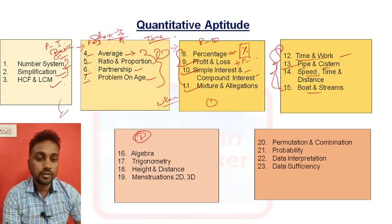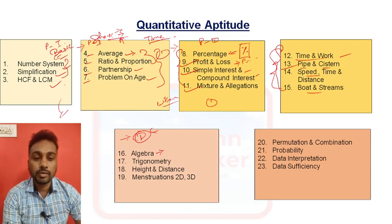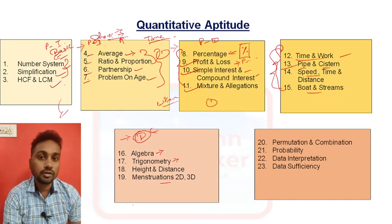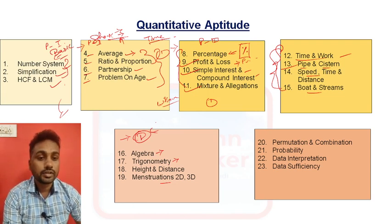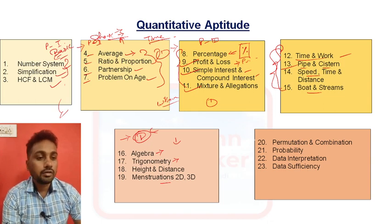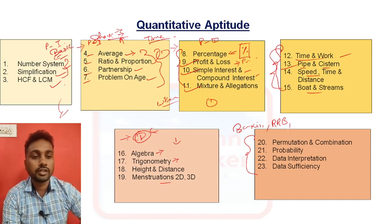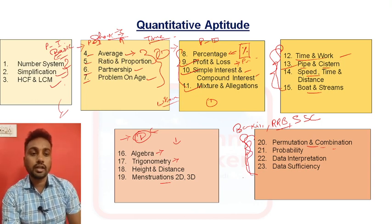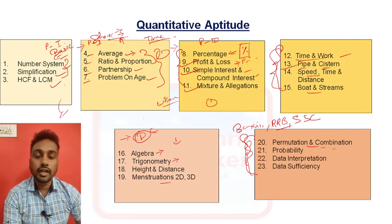In section five — algebra, trigonometry, and mensuration — students find this section a bit hard, so here you do need to remember some formulas. I will also share other tricks so you can solve by looking at options, but sometimes you will need to apply formulas. For section six, which is mainly for banking and also RRB railway exams coming soon, no need to remember any formulas — just know the concept and you can solve any question.